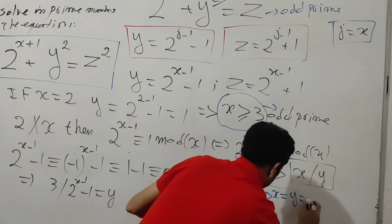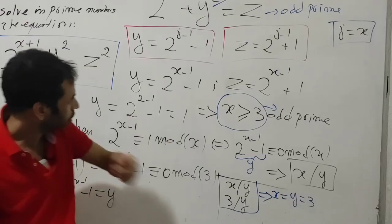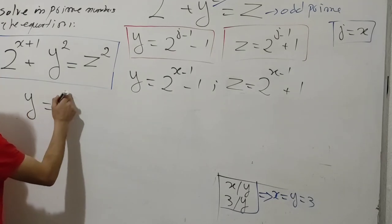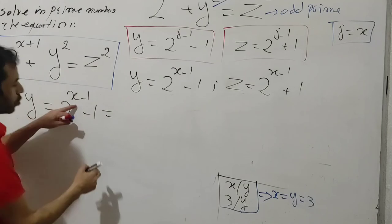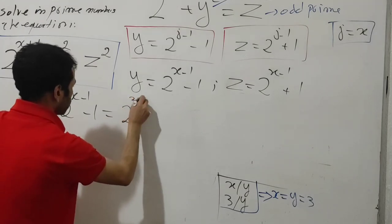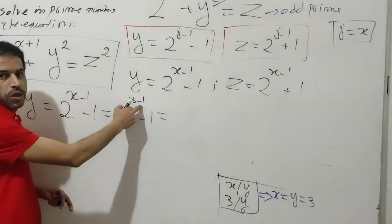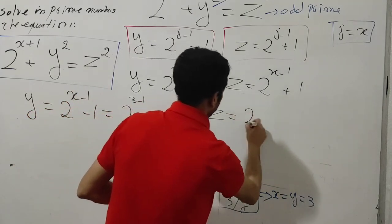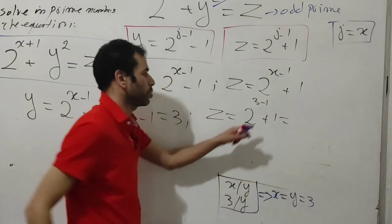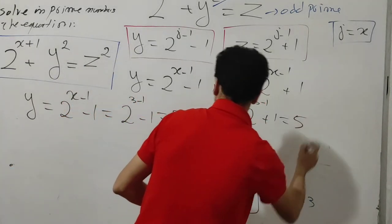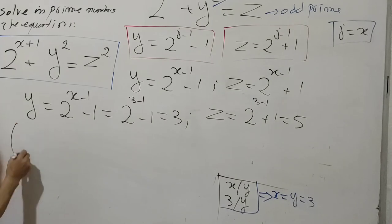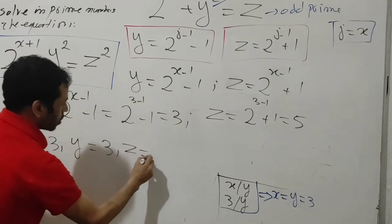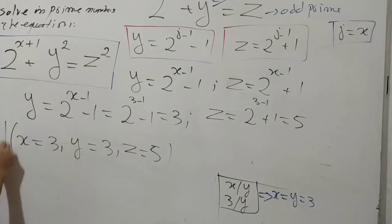Since x and y are prime numbers and x divides y and 3 divides y, we conclude x = y = 3. Substituting x = 3 into y = 2^(x-1) - 1 gives y = 2^(3-1) - 1 = 2² - 1 = 4 - 1 = 3. For z = 2^(x-1) + 1 = 2² + 1 = 4 + 1 = 5. The only solution in prime numbers is x = 3, y = 3, z = 5.